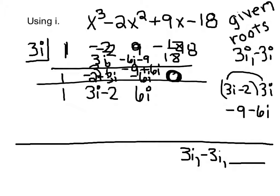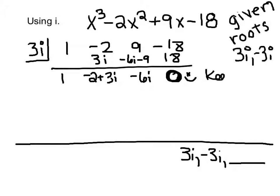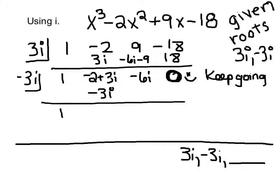Then we keep going, and that's one thing some people miss—they forget to keep going there. So this is -3i going in now. So it's 1, -3i. The i's cancel, you get -2. That becomes +6i. That becomes zero.